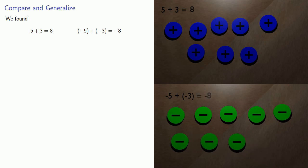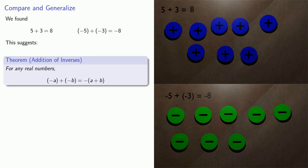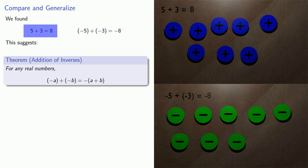The thing to notice is that the numbers are actually the same in both cases — here we have a five, three, and eight, and there we also have a five, a three, and an eight. The only difference is that one deals with the additive inverses. This suggests: if I want to add two additive inverses, I'll just add the numbers and take the additive inverse of the sum.